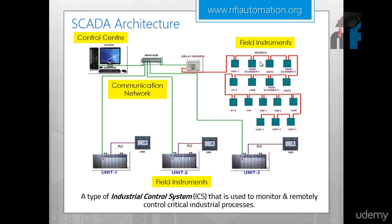This PLC is connected to various field instruments — temperature scanners, sensors, and actuators, both analog and digital — which are connected to the CPU. The PLC is connected to the computer via the main hub. The PC has SCADA software inside which can interact with field instruments via the PLC and communication network. This computer is also connected to multiple PLCs — Unit 1, Unit 2, Unit 3 — all based on the main hub.